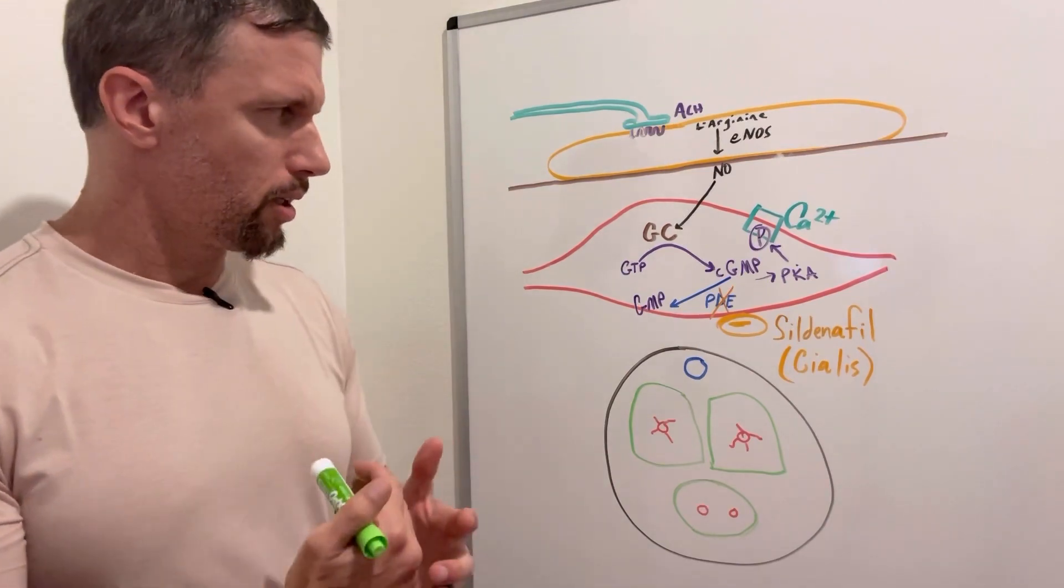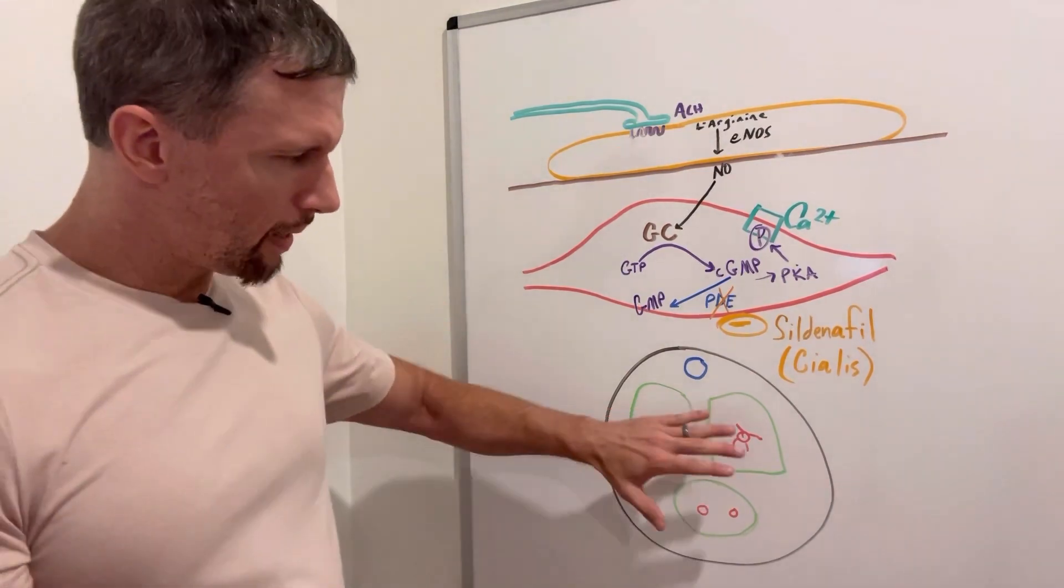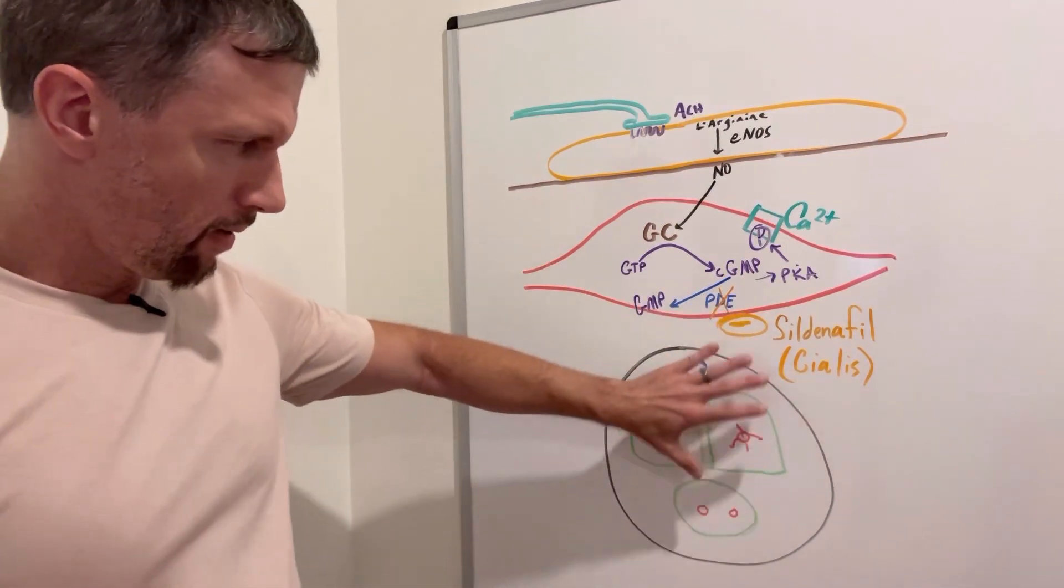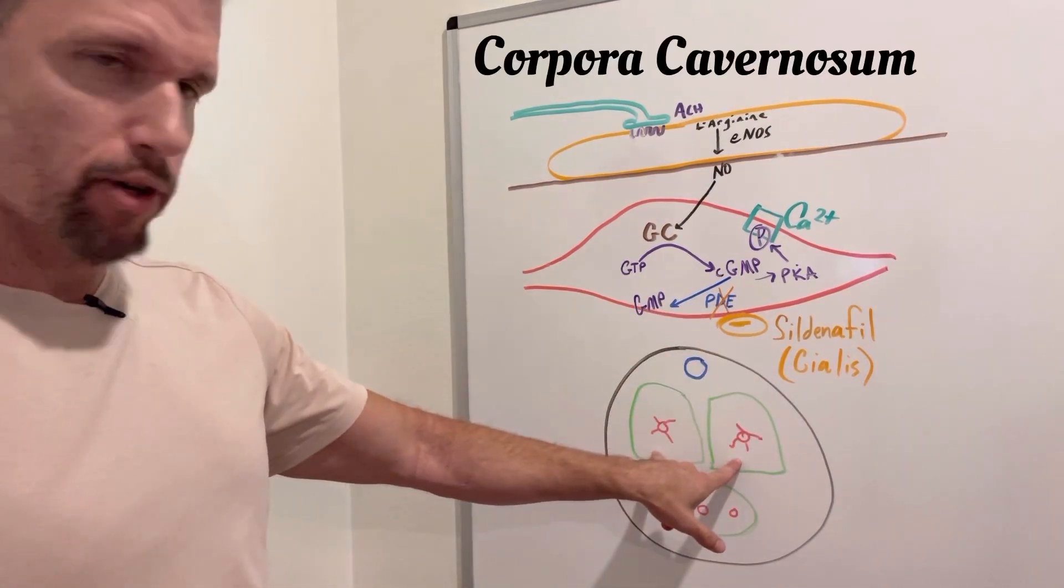So how does this work? The blood vessels of the penis—like here's a cross section—we have the corpora cavernosum, which is a spongy tissue up here.